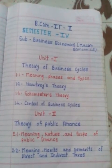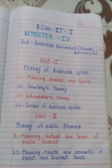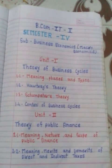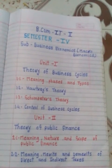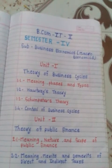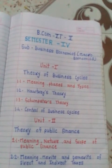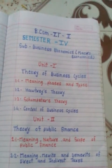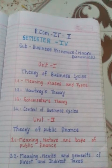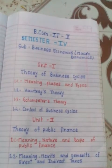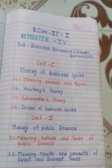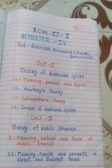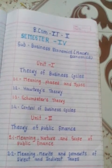In unit 1.1 we have to understand the meaning of the business cycle. Business cycle means the good period of increasing investment — the boom — and the bad period of depression. There are four phases of the business cycle: boom, depression, recession, and recovery. All these phases we have to discuss in the business cycle.